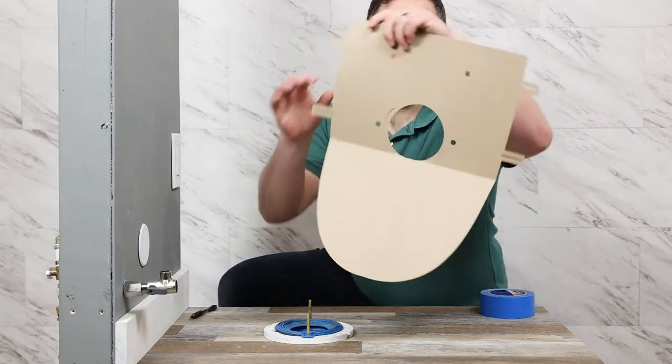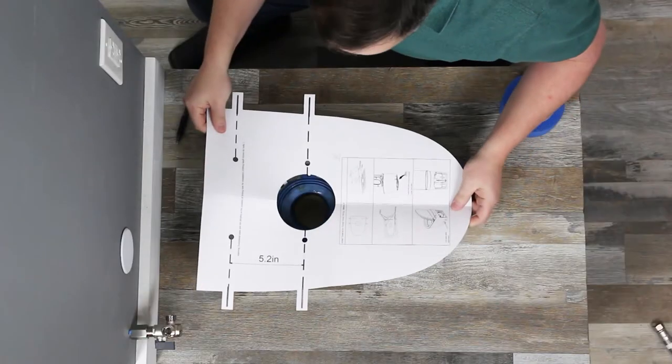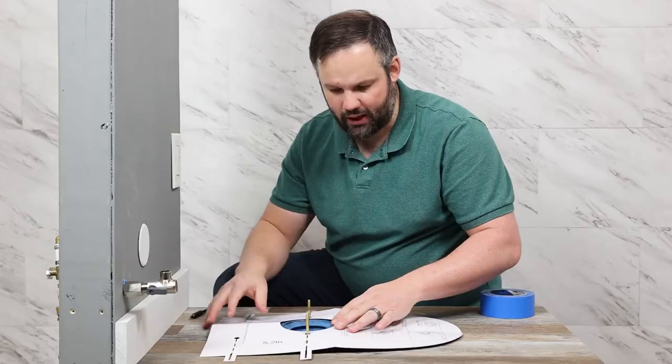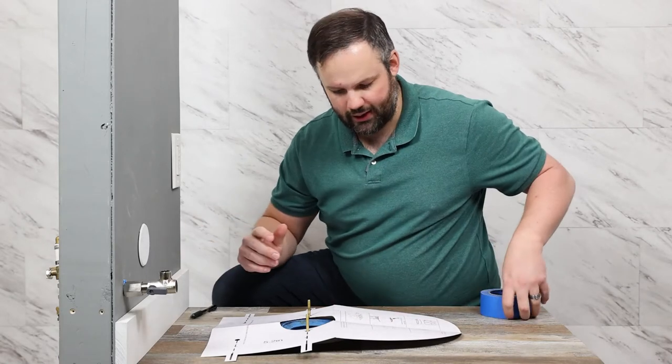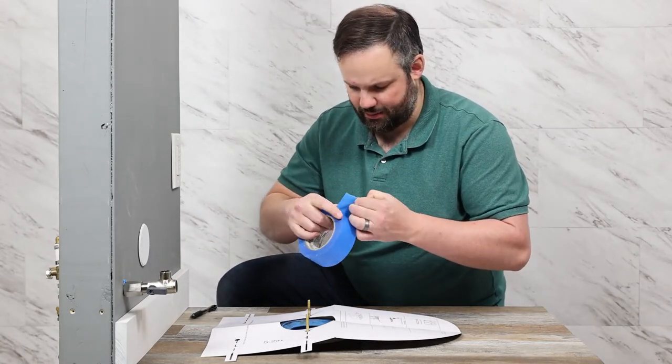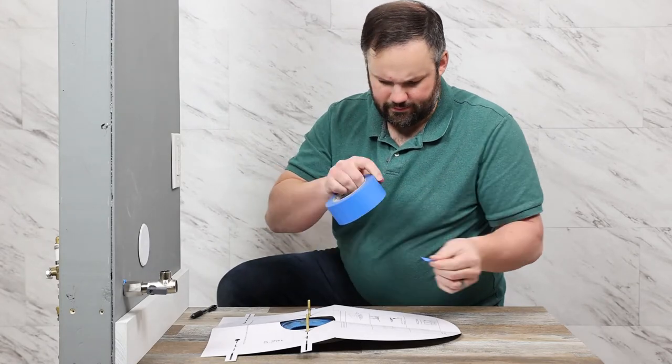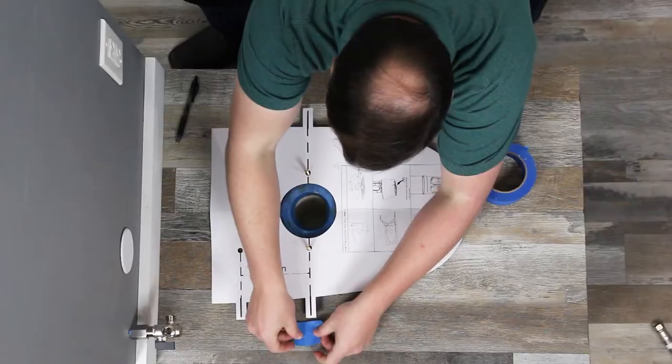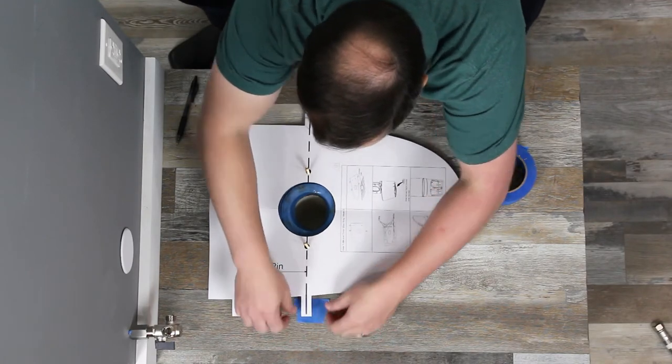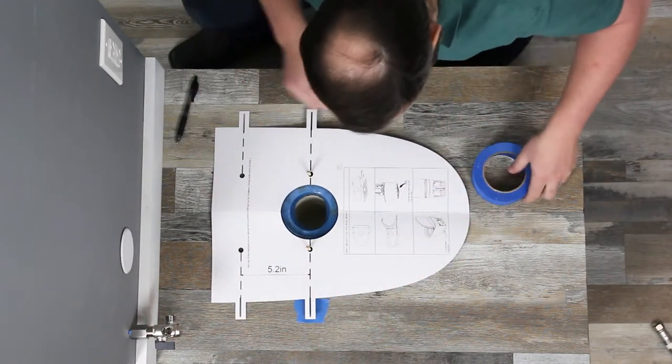Thankfully, the Studio Luxe line provides us with a template. So we're going to go ahead and put this template on. Now this template can't stay here because we're going to be placing the toilet on top. So what we like to do is take a little bit of painter's tape here and put it down underneath these tabs on either side.